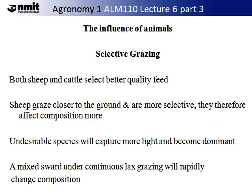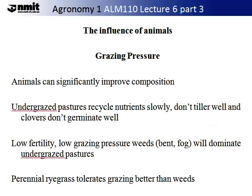The livestock have an influence on the grazing. This is known as selective grazing. Both sheep and cattle can select better quality feed. Sheep graze closer to the ground and are more sensitive, therefore affecting composition more. Undesirable species will capture more light and become dominant. A mixed sward under continuous lax grazing will rapidly change composition. Animals influence grazing paddocks by applying pressure and can significantly improve composition.